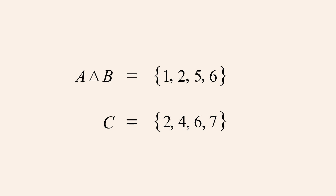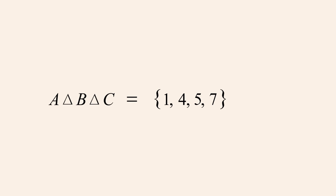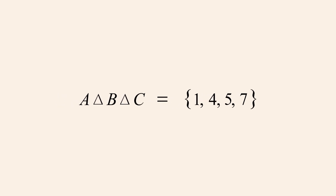We now form the symmetric difference of this set with set C. These two sets have the numbers 2 and 6 in common, so their symmetric difference contains all the elements except for 2 and 6. The symmetric difference of sets A, B, and C therefore consists of 1, 4, 5, and 7.